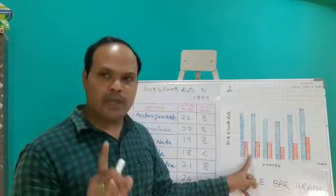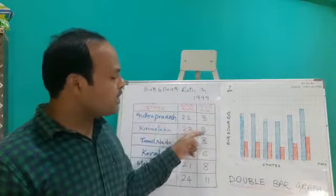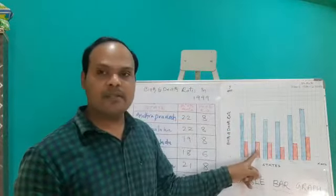Now, I gave 1 unit gap and again I have chosen the state Karnataka. Birth rate 22, death rate 8. The blue color represents birth rate and red one represents death rate 8.